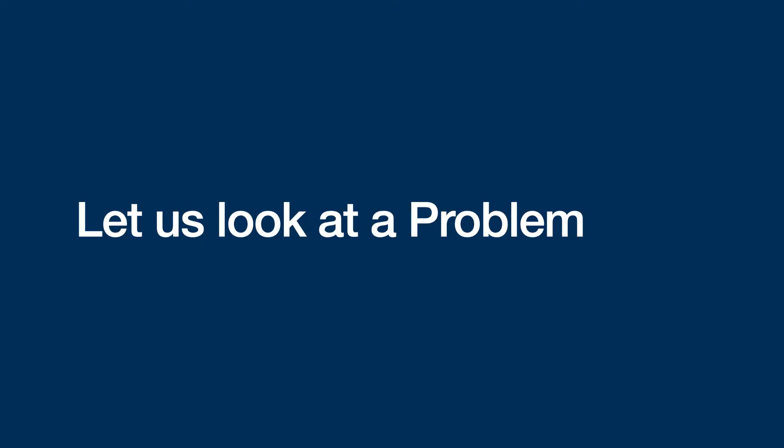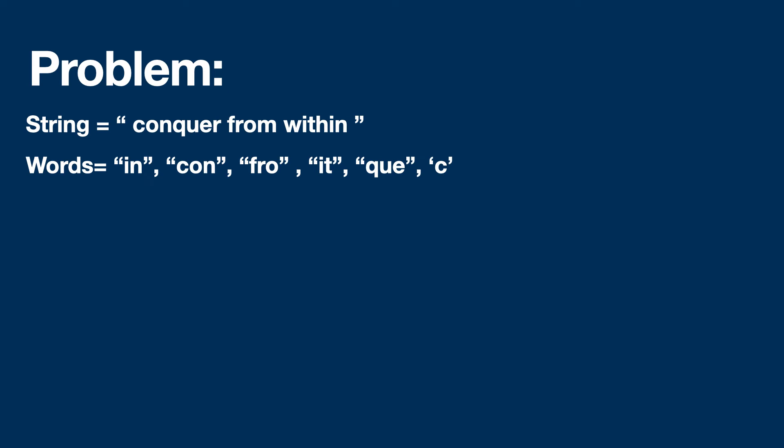Now let us look into a problem. Here the problem is, there is a string conquer from within, and these following words are to be searched and if it is present, we need to print them. We will use Aho-Corasick automation to solve the above problem.